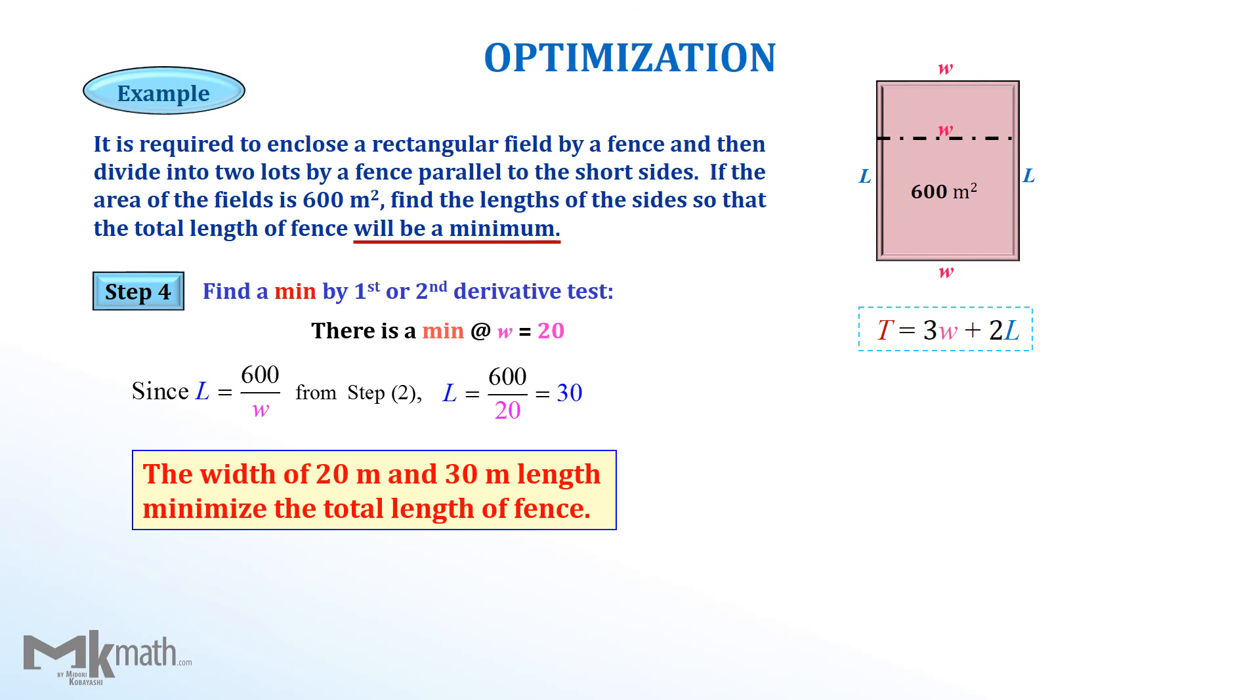The widths of 20 meter and 30 meter lengths minimize the total length of the fence. For your reference, we can find the minimum total length, 120 meter, using the equation in step 1.